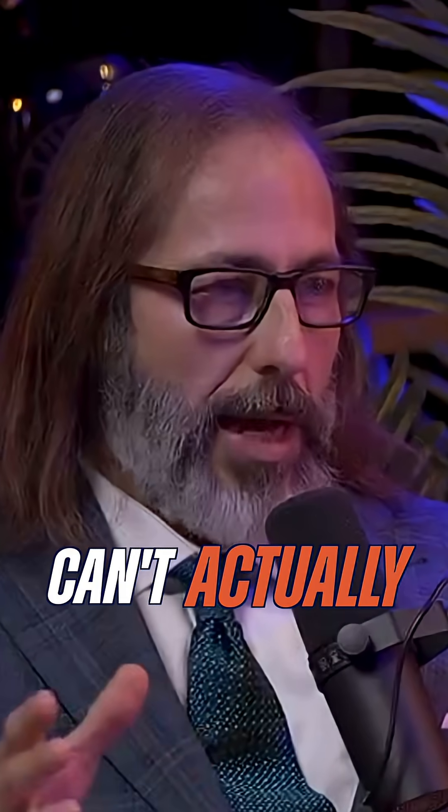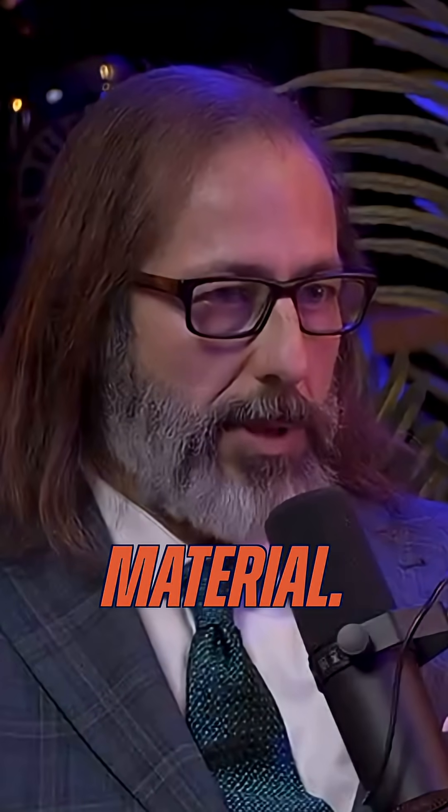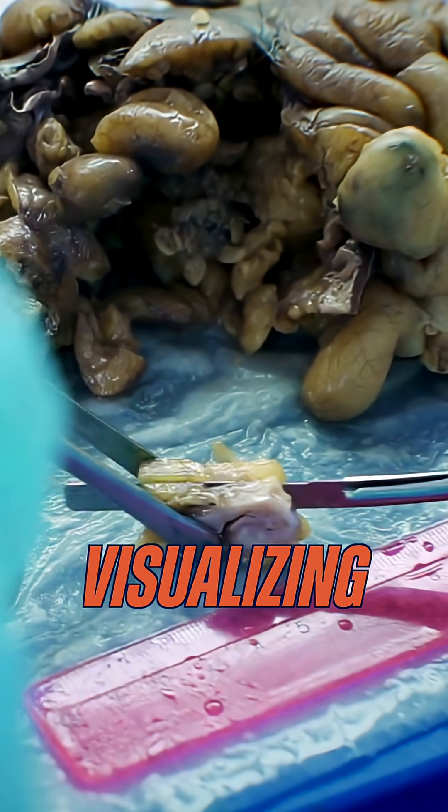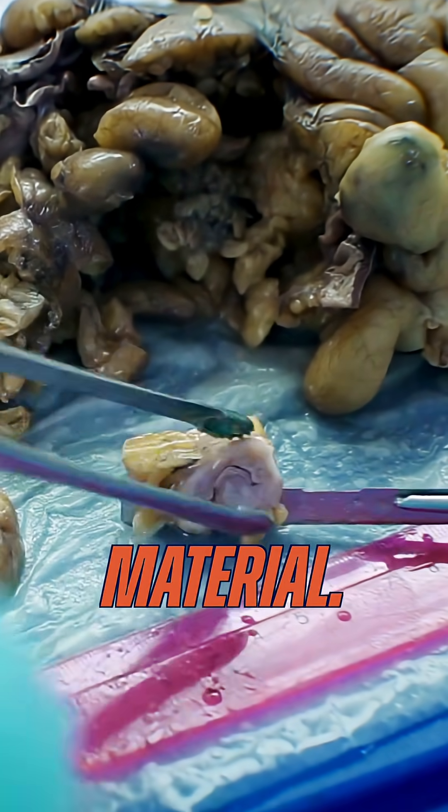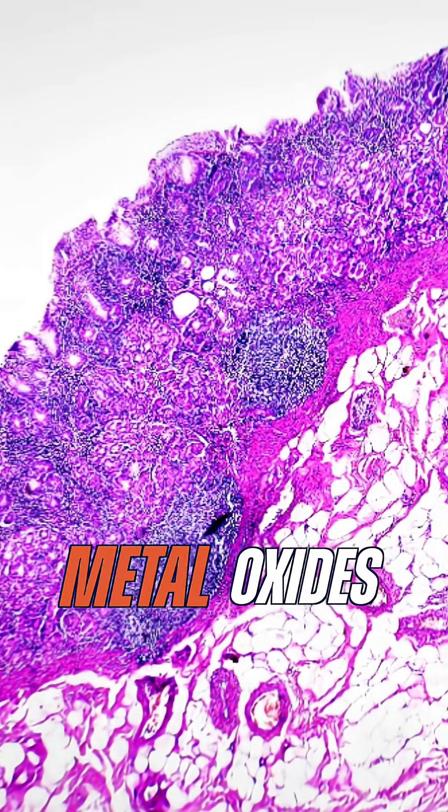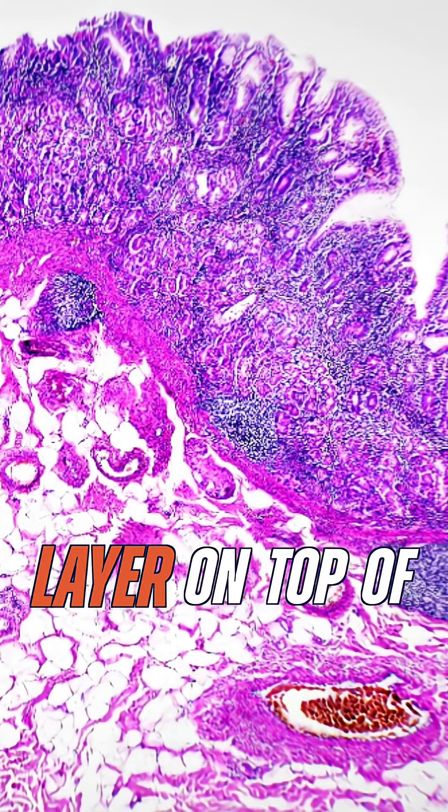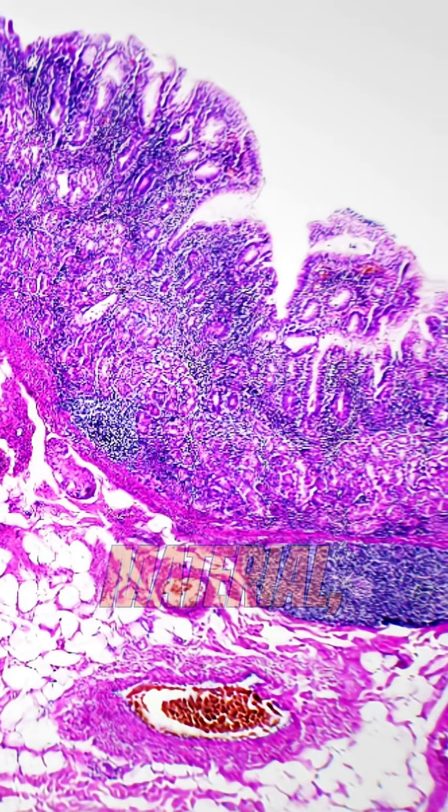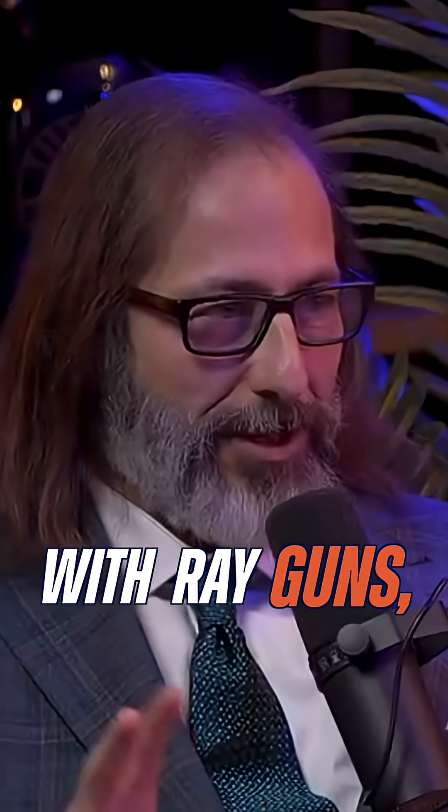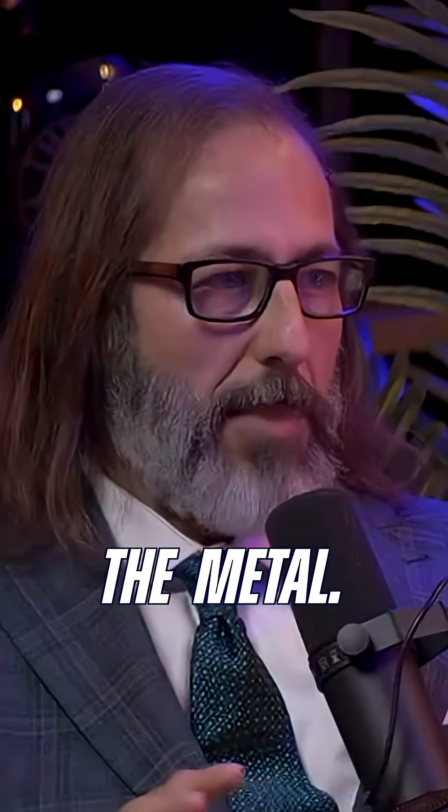Because an electron microscope can't actually see carbon-based material. So you're not visualizing directly the biological material. You're visualizing metal oxides that are applied like a thin layer on top of the biological material, which is then evaporated with ray guns, so to speak. And then you're just seeing the metal.